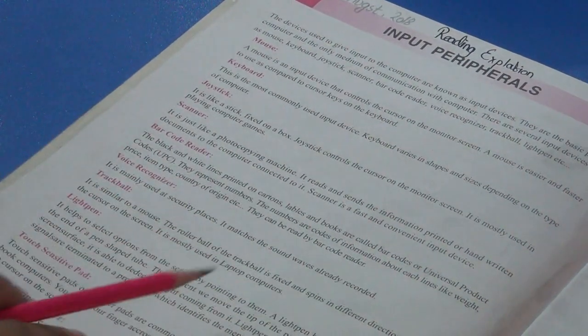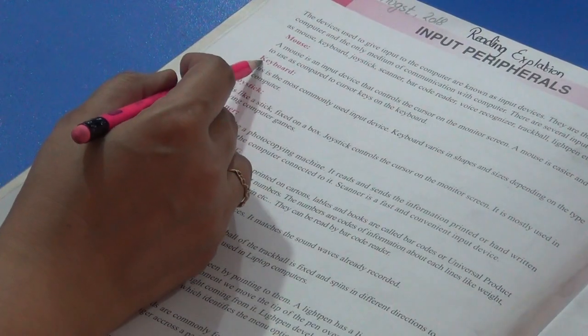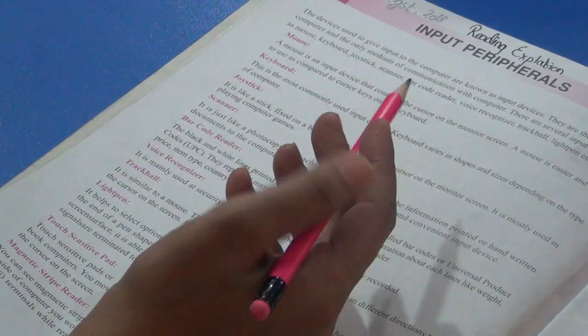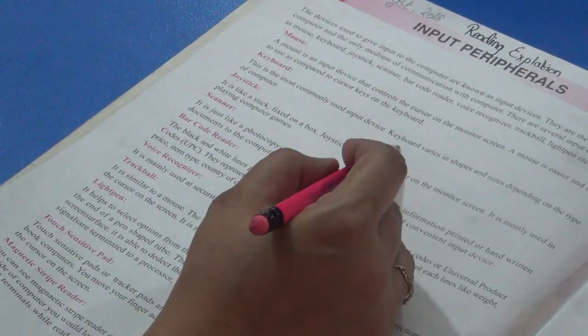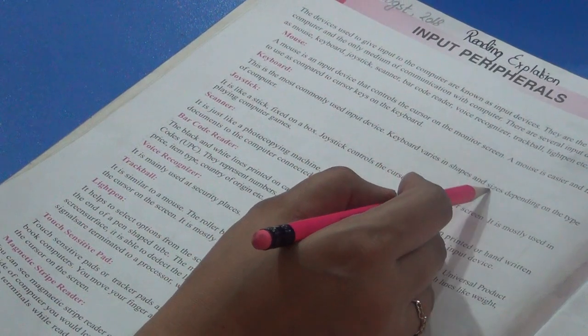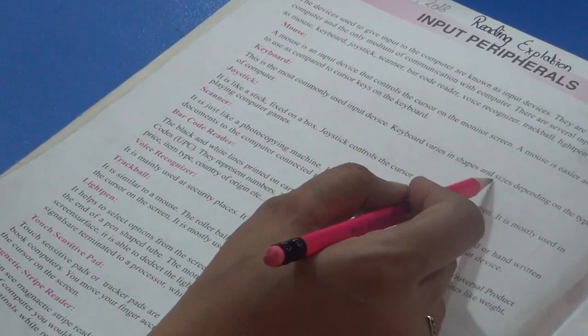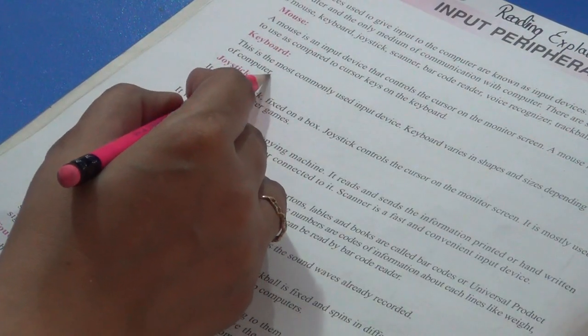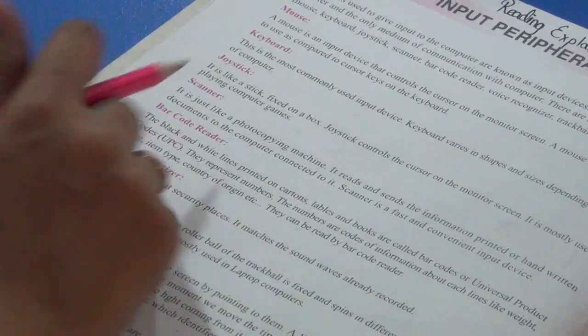This is the most commonly used input device. We mostly use this in our homes. Keyboard varies in shape and sizes. There are many shapes and sizes depending on the type of computer.